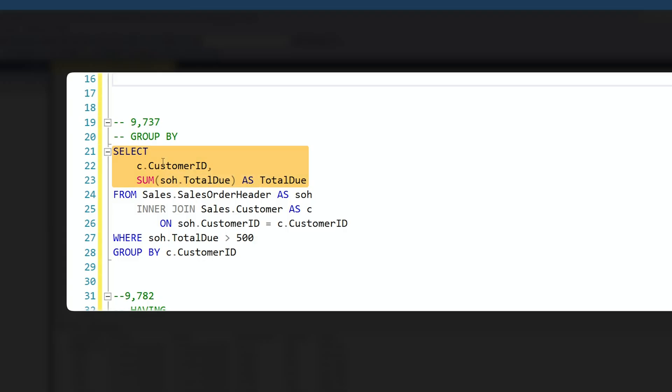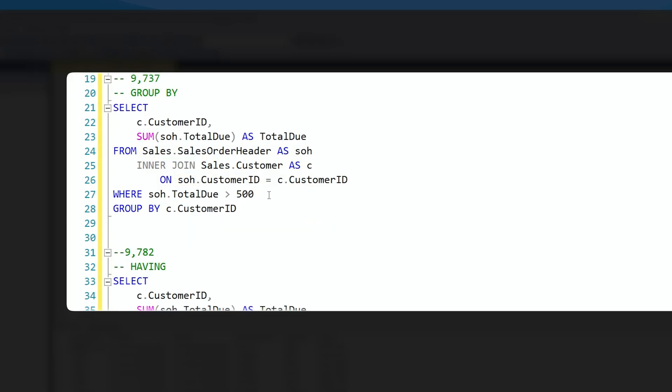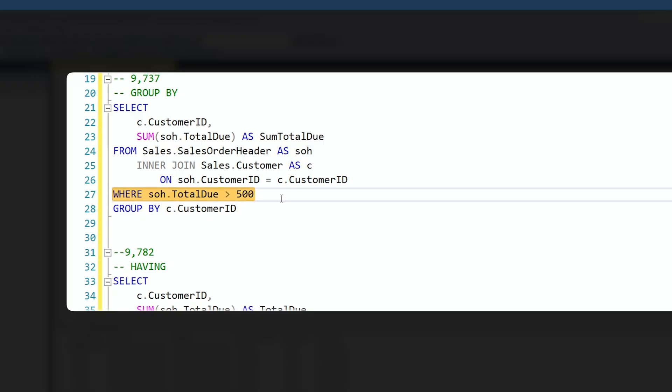In my SELECT statement, I'm connecting to the customer ID. I'm using the SUM function and I'm renaming this as total due. Then I'm grabbing my sales order header table as well as my customer table, making sure to alias them both. And they're going to be joined on the customer ID. Interestingly enough, I still have my WHERE statement here. And I'm saying where total due is greater than 500. So in my WHERE clause, I have my total due. I'm checking for it to be greater than 500.